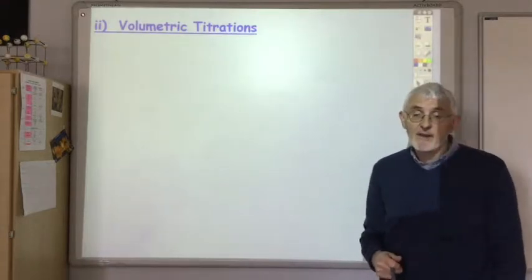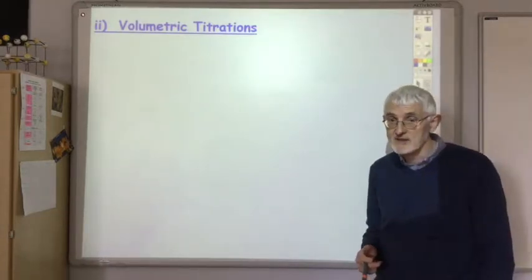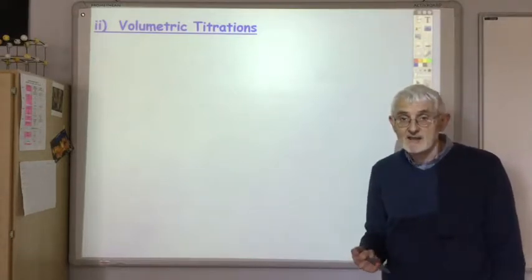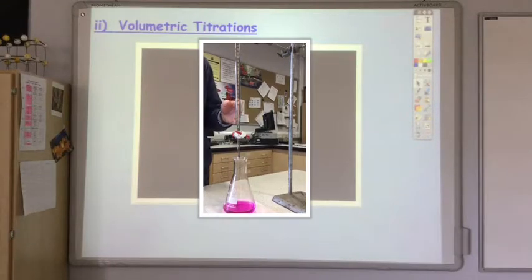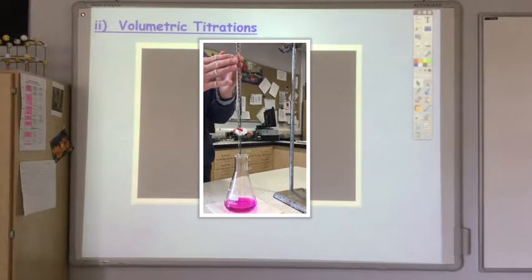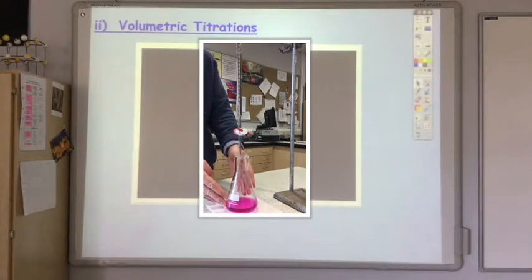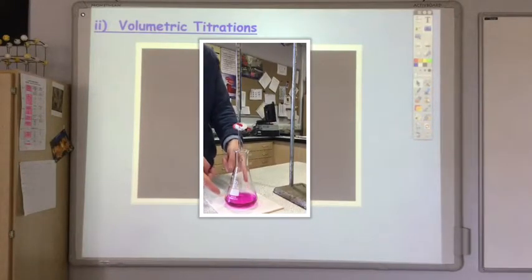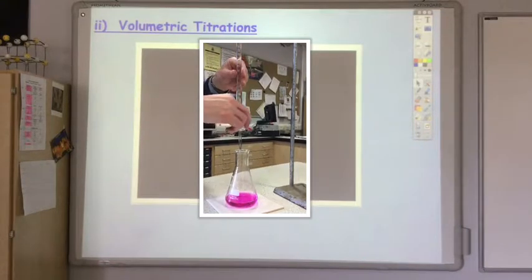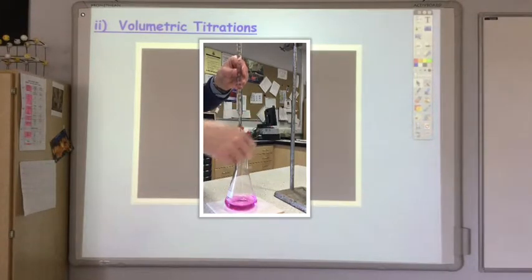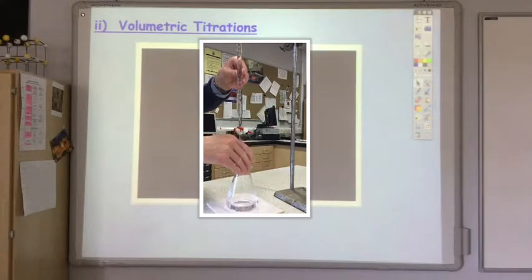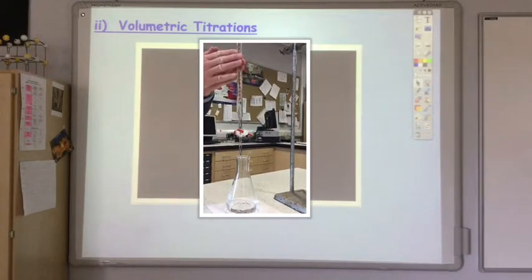The second type of quantitative calculation is based on volumetric titrations. This is the setup: the burette contains a known concentration of hydrochloric acid, and in the flask we have sodium hydroxide base with an indicator giving a pink color. We find out how much acid we need to add to change the color. We add it slowly near the endpoint and stop when the solution goes colorless, then record the new volume and calculate the volume of acid required to neutralize the base.